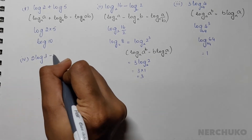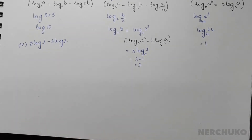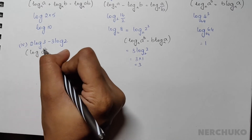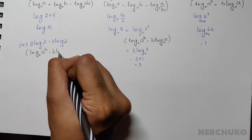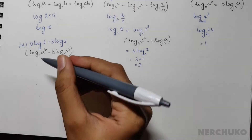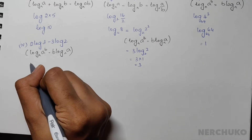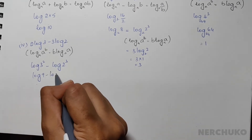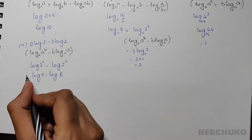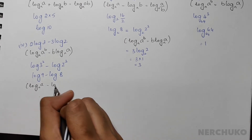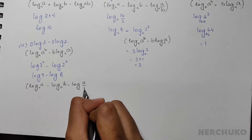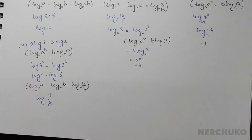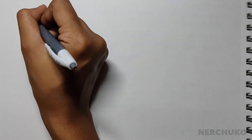For the fourth part, we have 2 log 3 minus 3 log 2. Using the power rule formula, this becomes log 3 squared minus log 2 cubed, which gives log 9 minus log 8. Applying the subtraction formula, log a to base n minus log b to base n equals log a divided by b to base n, we get log 9 divided by 8. The answer is left here as it cannot be simplified further.